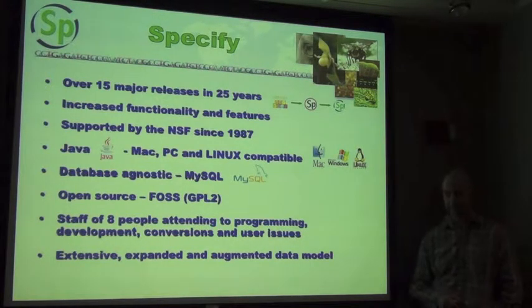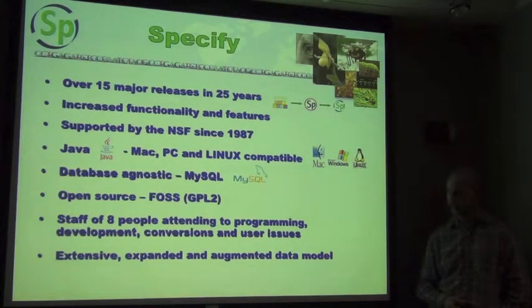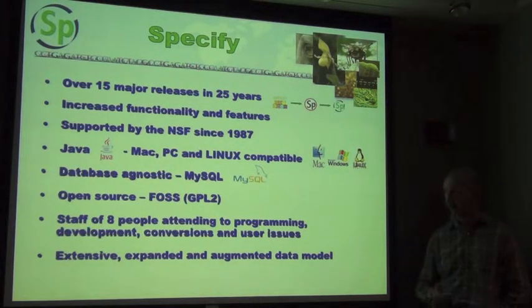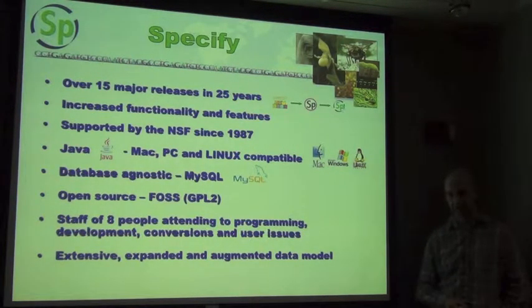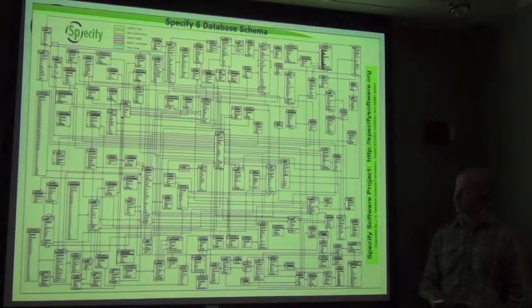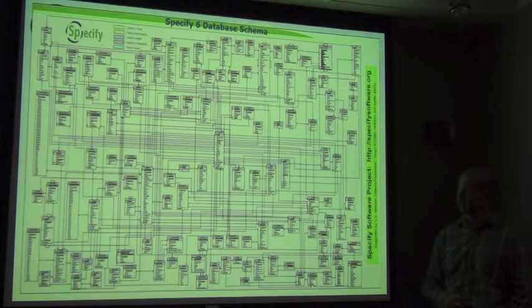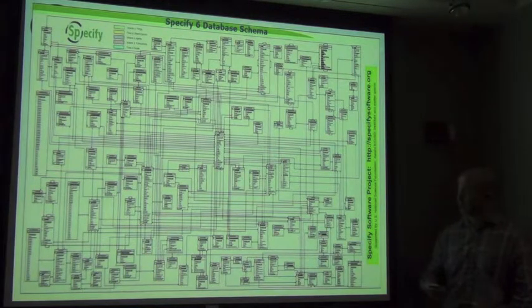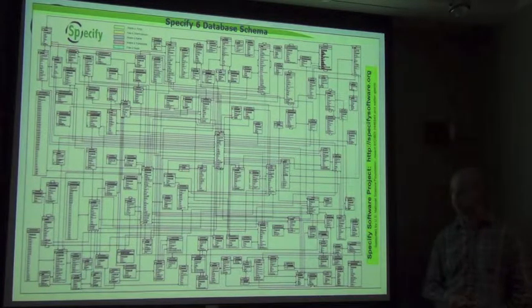As mentioned, it's open source — all of the code is available through a FOSS GPL 2 license. We have a staff of about eight people here in Kansas attending to the programming, development, conversions, and user issues for all of our clients. We have a very extensive data model which we have expanded and augmented over the years — 143 tables, about 2,400 fields, a truly relational system where all the tables are interlinked and no one field is duplicated within the system.